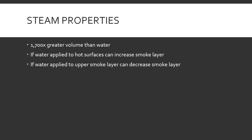Properties of steam: steam has a volume that is 1,700 times greater than the same volume of water. So if you put a gallon of water on a fire, it expands into steam that has the volume of 1,700. Some notes on steam though — if the water is applied to hot surfaces, it can increase the smoke layer.